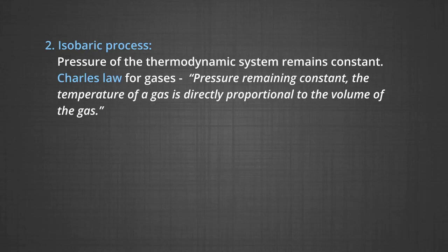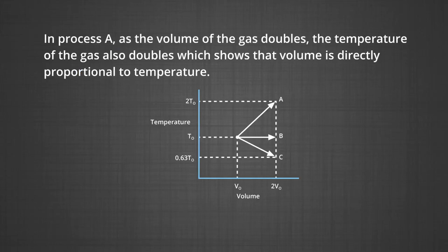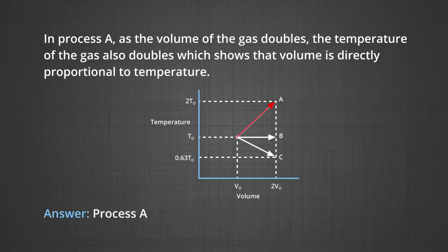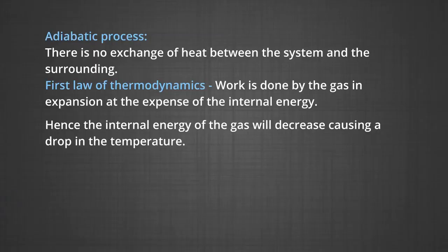In the second case, the isobaric process: pressure remains constant. According to Charles' law, with pressure constant, temperature is directly proportional to volume. In process A, as the volume of the gas doubles the temperature also doubles, showing volume is directly proportional to temperature. So the answer for the isobaric process will be process A.